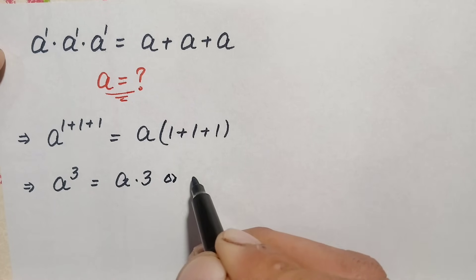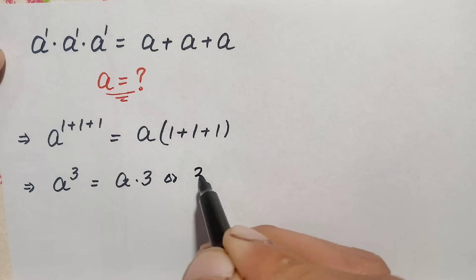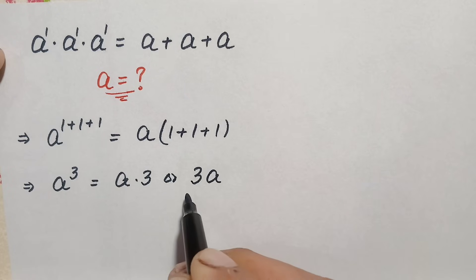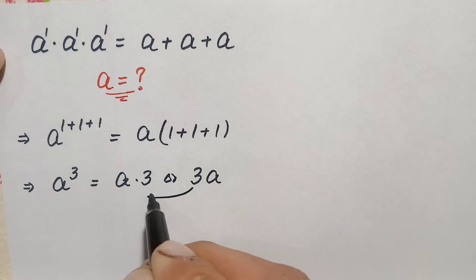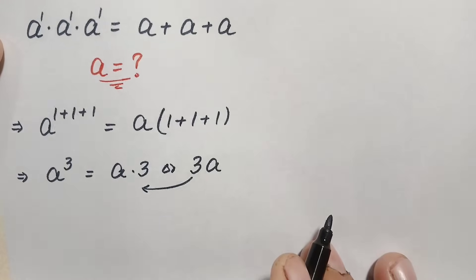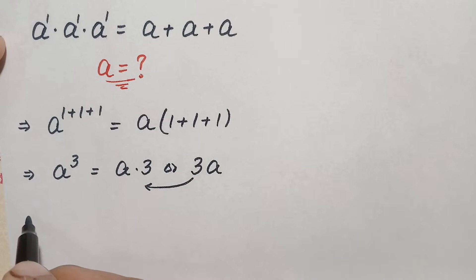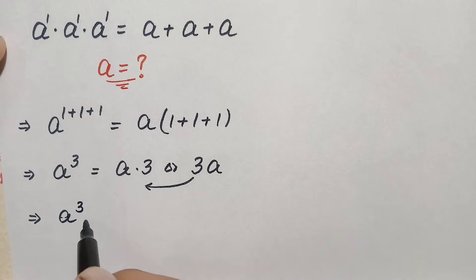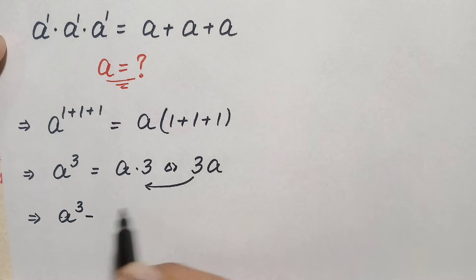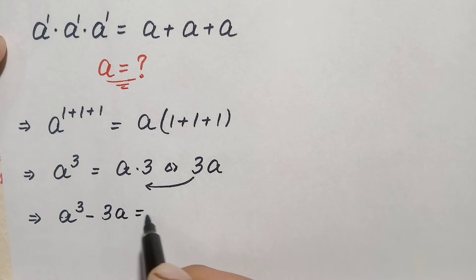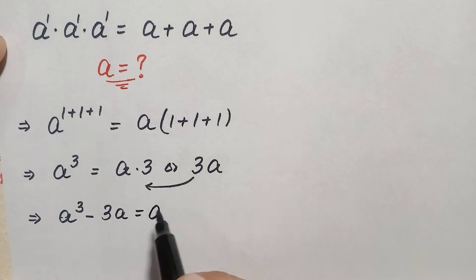We can write this as 3 times a. Now we will move 3a to the left-hand side, so it becomes negative 3a. The equation becomes: a cubed minus 3a is equal to zero.